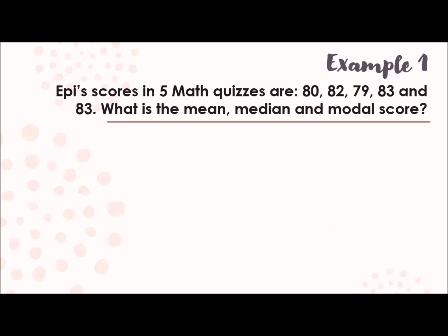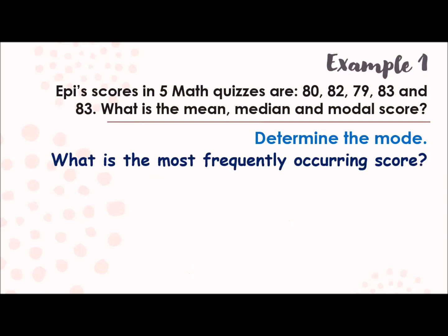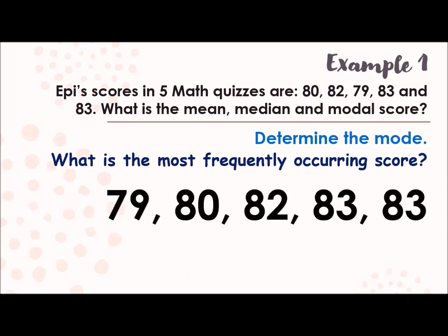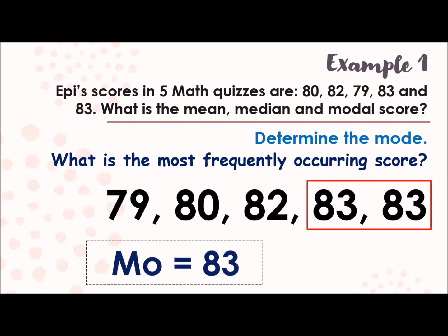Next one. Let's proceed to another item or another question, which is the mode. Determine the mode. Again, that is the most frequently occurring score. The one that repeats the most. That's the data from our first example again. So which one repeats the most? So that is 83. So that is our mode. Now the question here is, what type of mode is that? How many modes do we have? We have only one, which is 83. Meaning, that is unimodal.